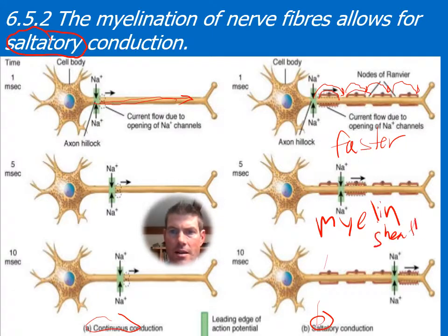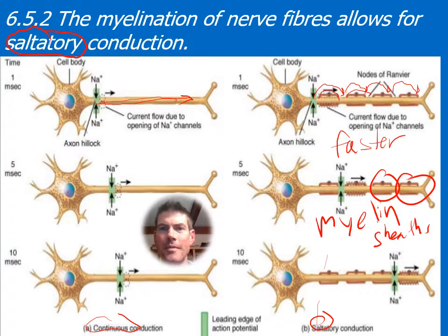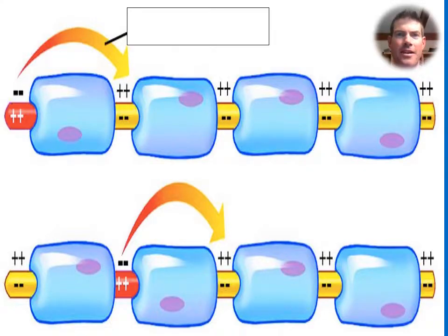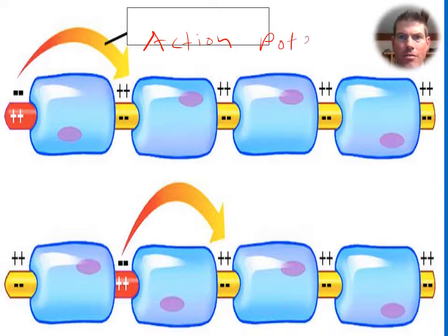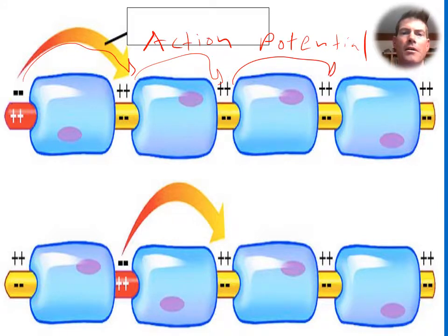Those are the myelin sheaths. We also have nodes of Ranvier — kind of fun. Here we have the action potential shown in a close-up image. Normally the outside is positive and the inside is negative. So during depolarization, it switches — the outside goes negative and the inside goes positive.